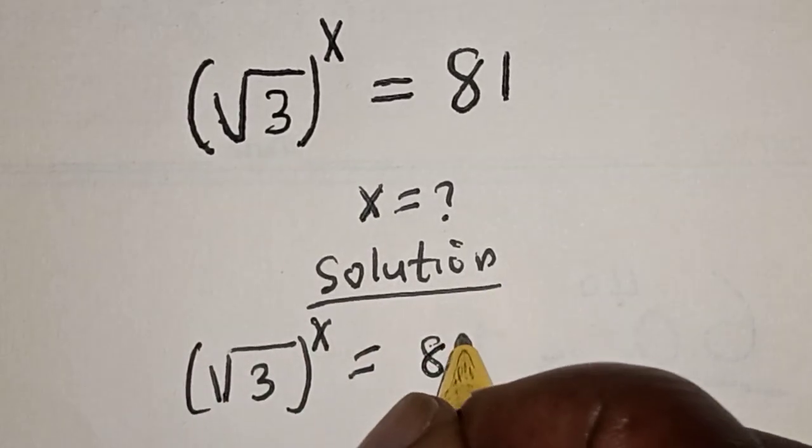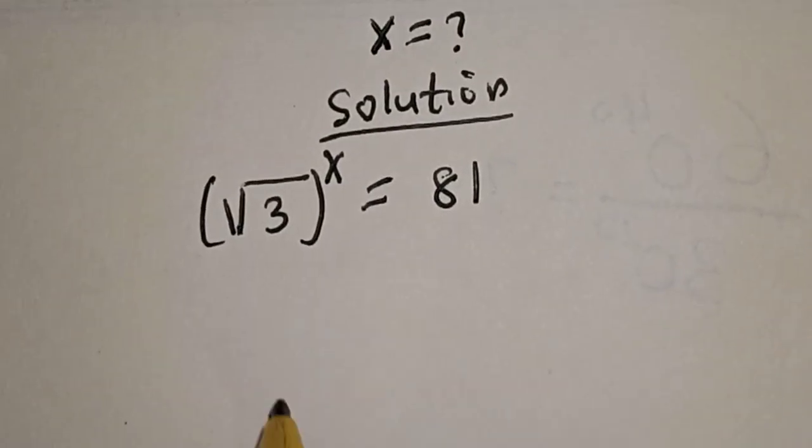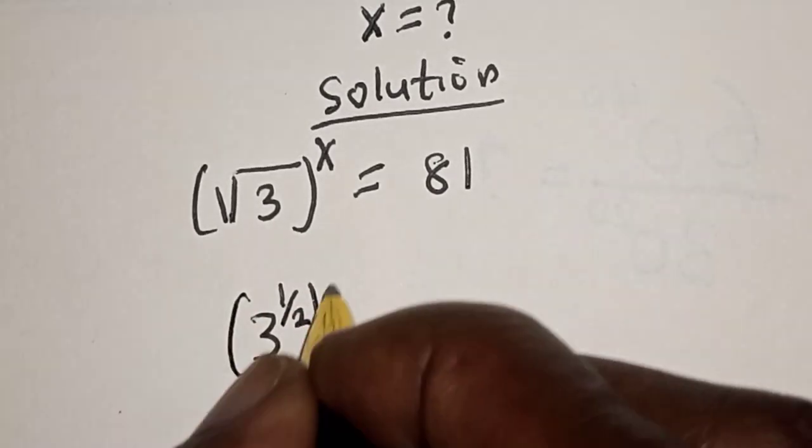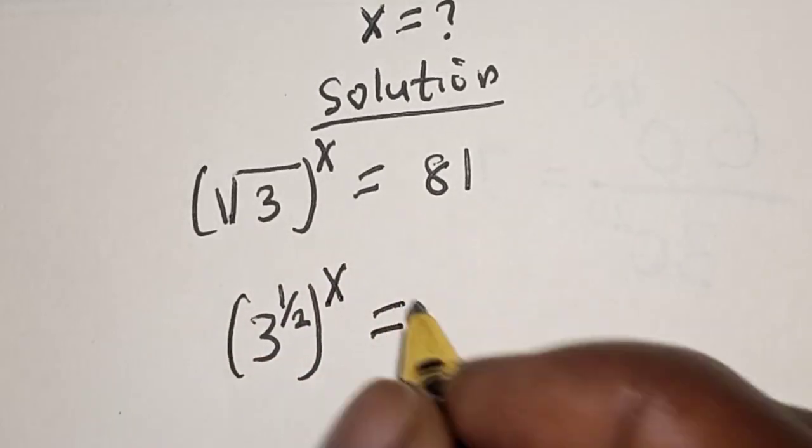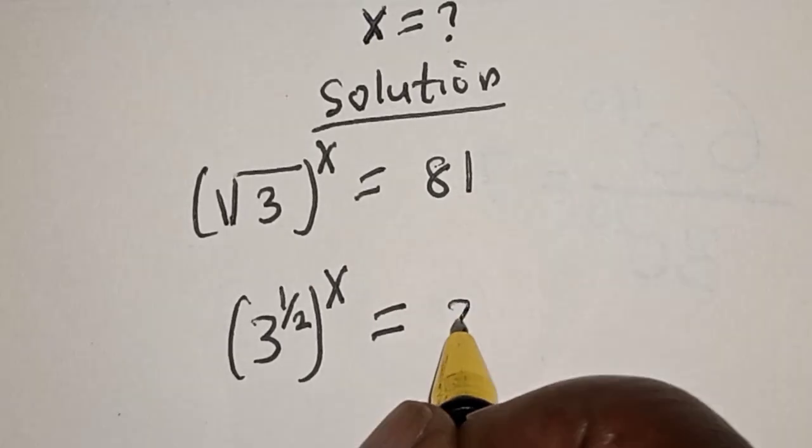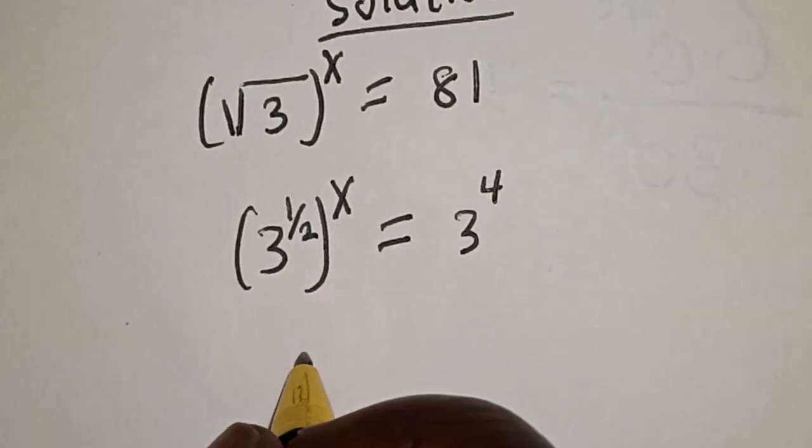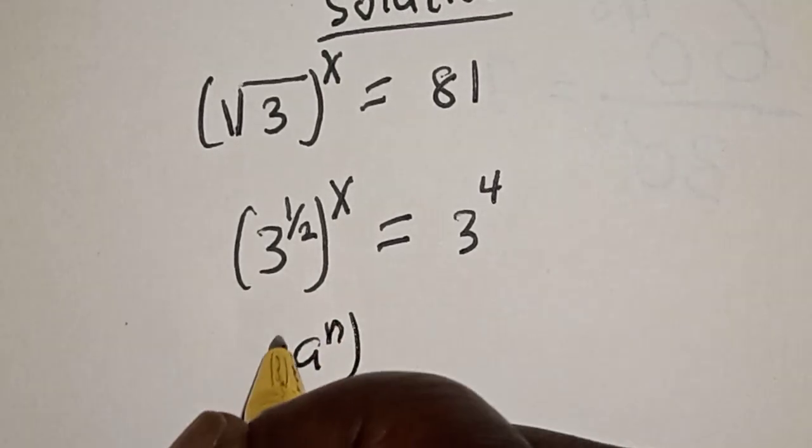Solution: We have the given equation root 3 raised to power x is equal to 81, and this is the same thing as 3 raised to power 1 over 2, raised to power x, is equal to 3 raised to power 4. Now remember this rule: